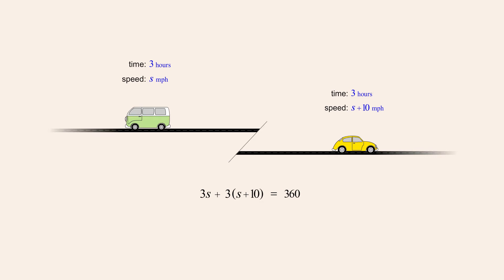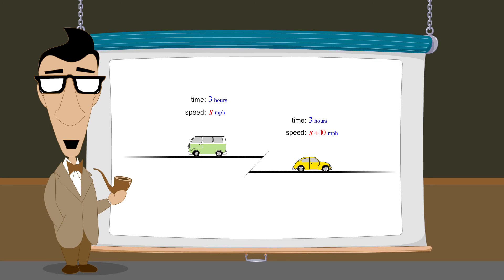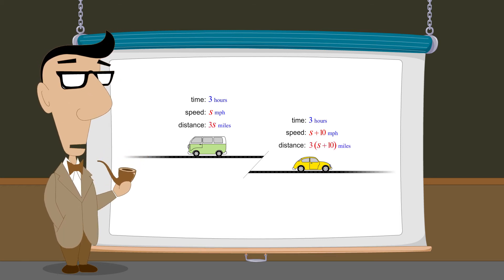Both vehicles traveled for three hours, so knowing that speed times time equals distance, we wrote expressions for the distance traveled by each vehicle. In three hours, the bus traveled 3s miles and the car traveled 3 times s plus 10 miles. Since the sum of these distances must equal 360 miles, we created a single equation. Solving this, we get s equals 55, so the bus's speed is 55 miles per hour and the car's speed is 65 miles per hour. We were able to express both unknowns in terms of a single variable and combine expressions into a single equation.